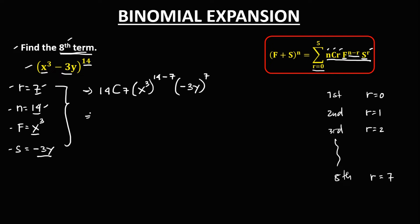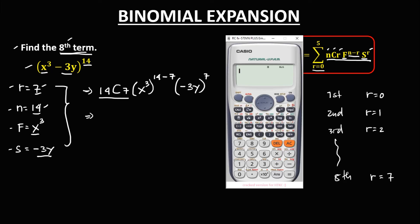Then simplify. So for 14 choose 7, we find the value using a calculator: 14, then nCr, then 7. So 14 choose 7 equals 3,432.